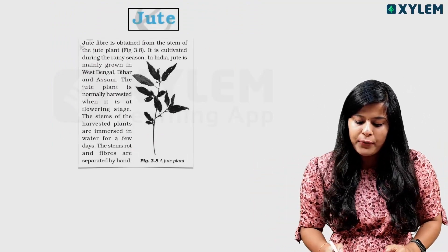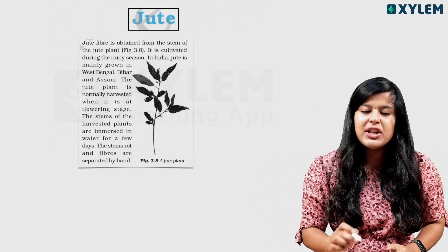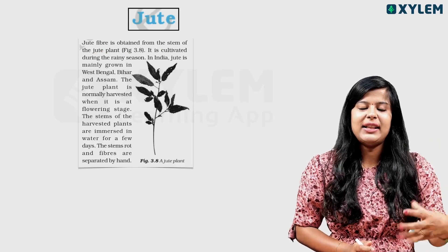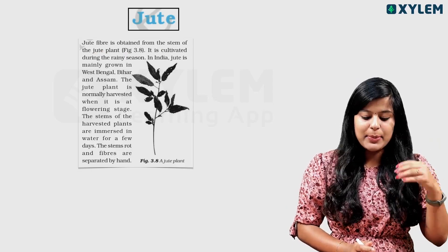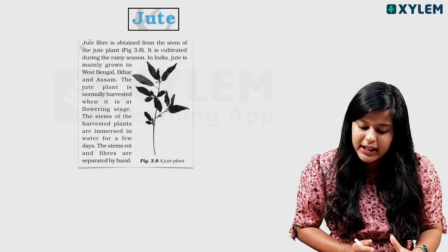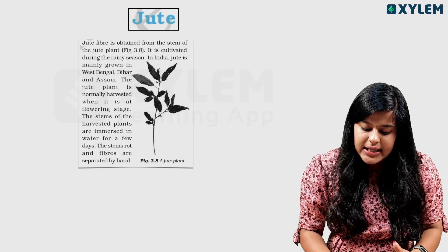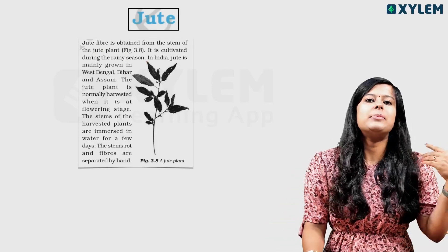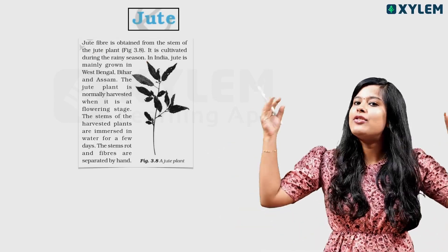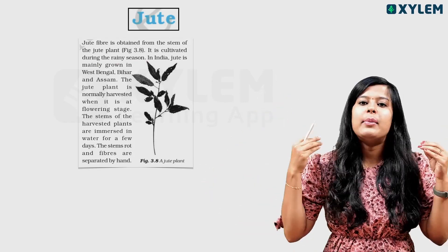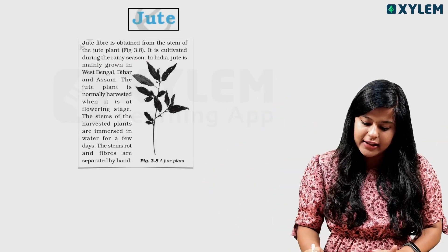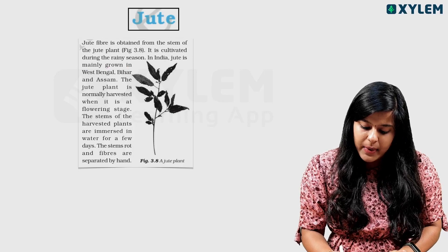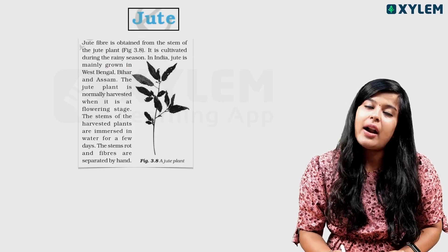Jute fiber is obtained from the stem of the jute plant. It is cultivated during the rainy season. In India, jute is mainly grown in West Bengal, Bihar, and Assam.